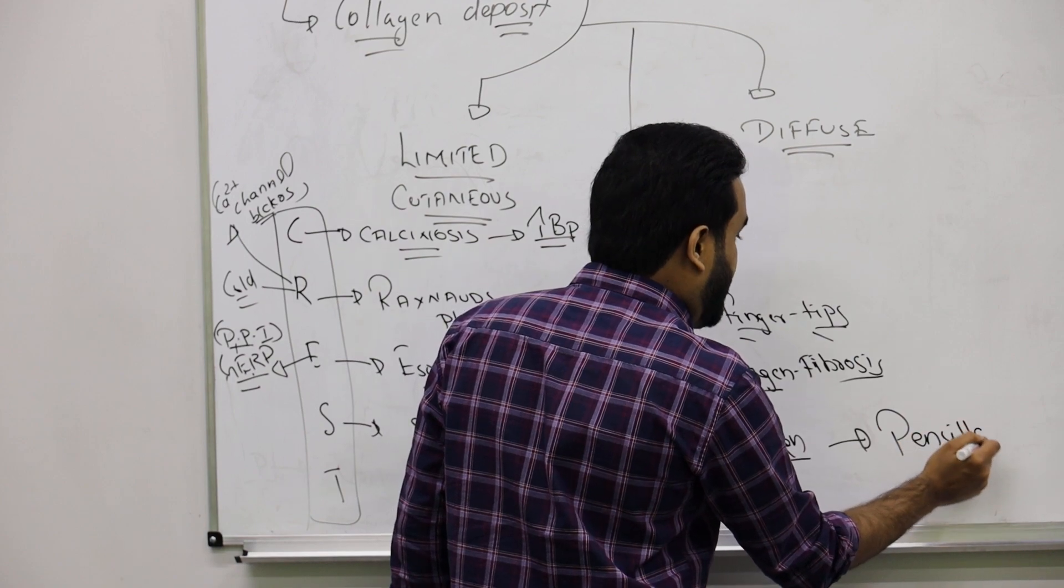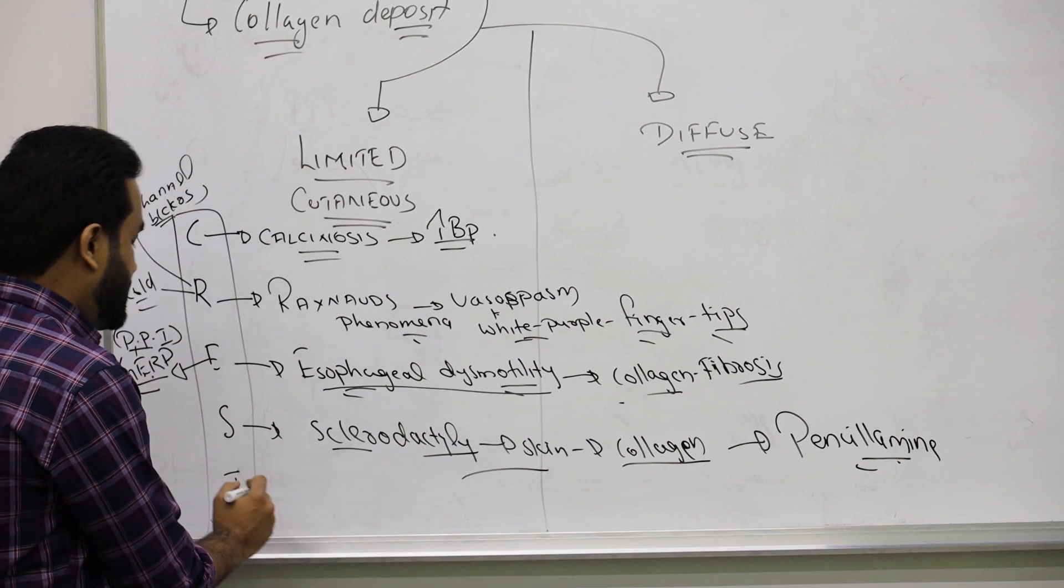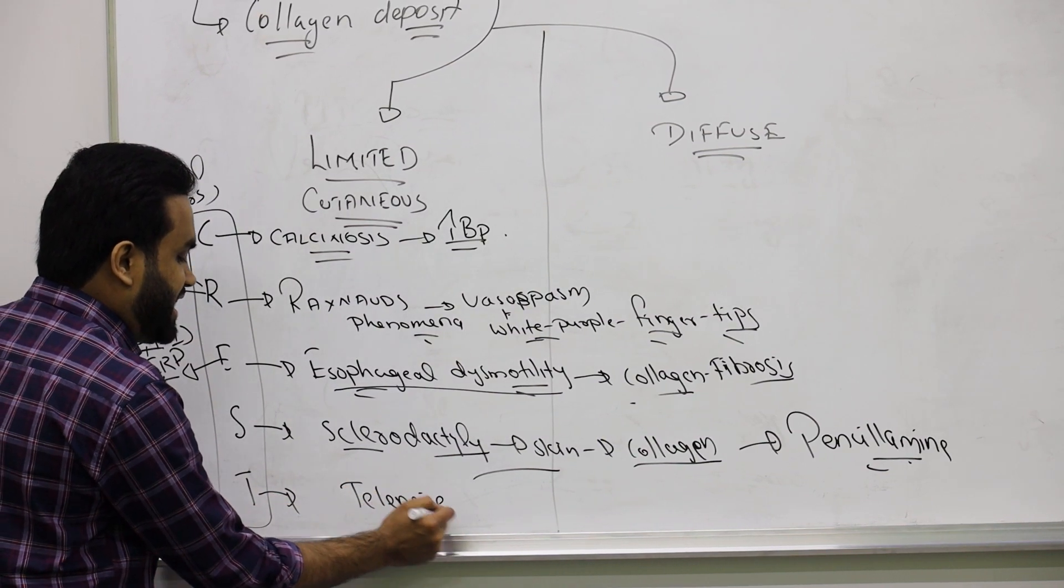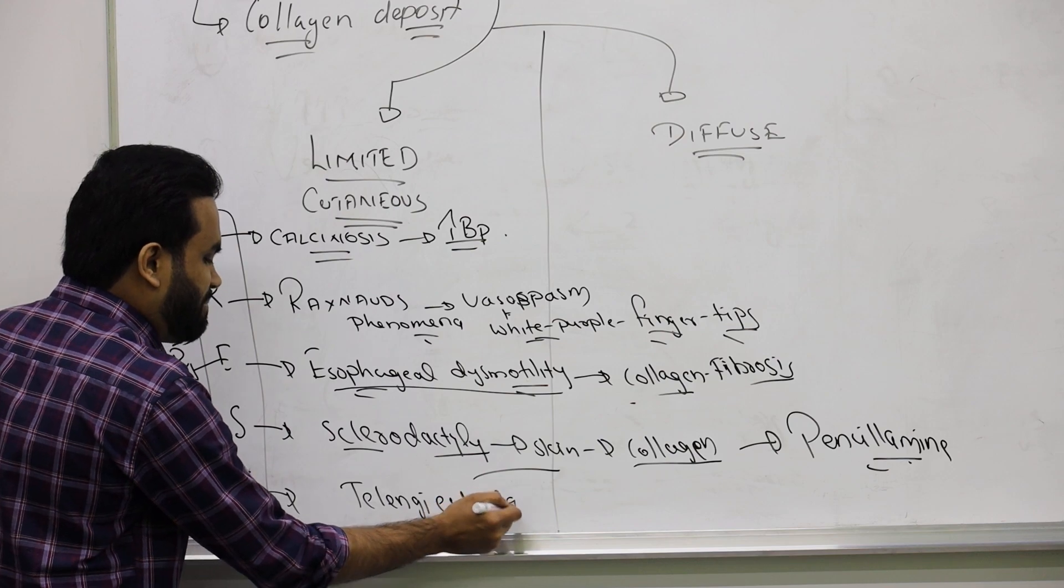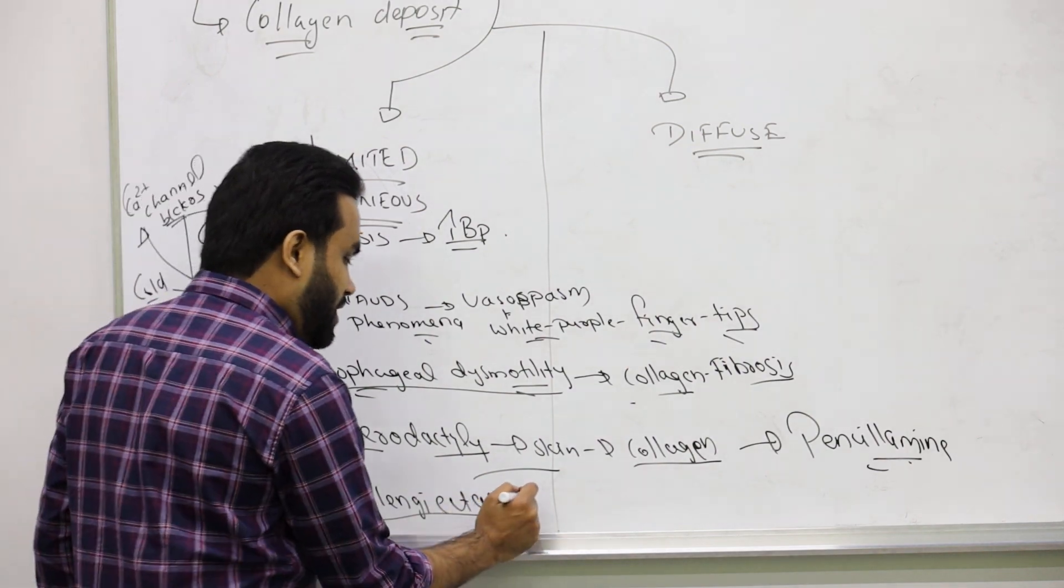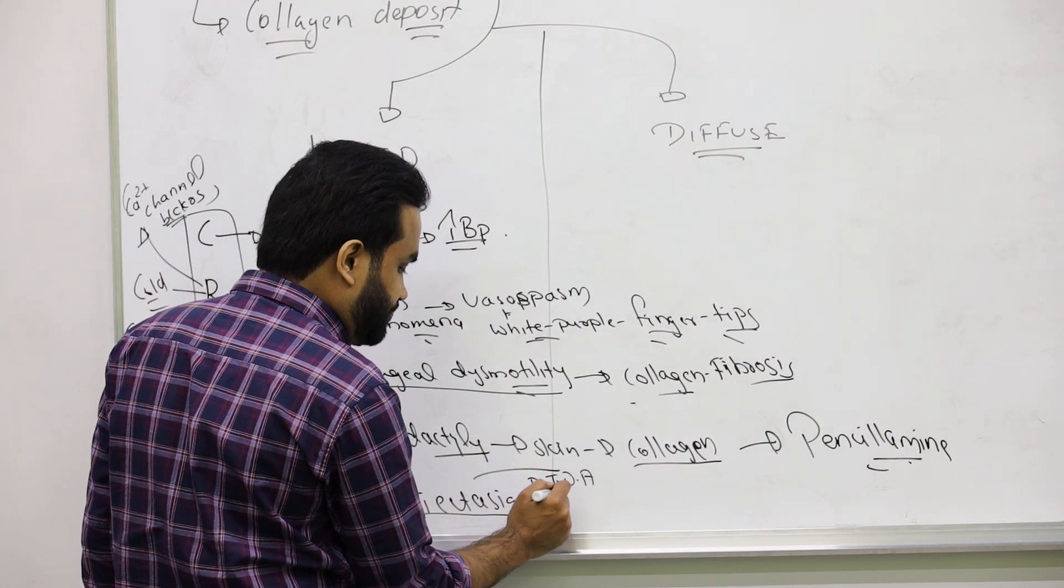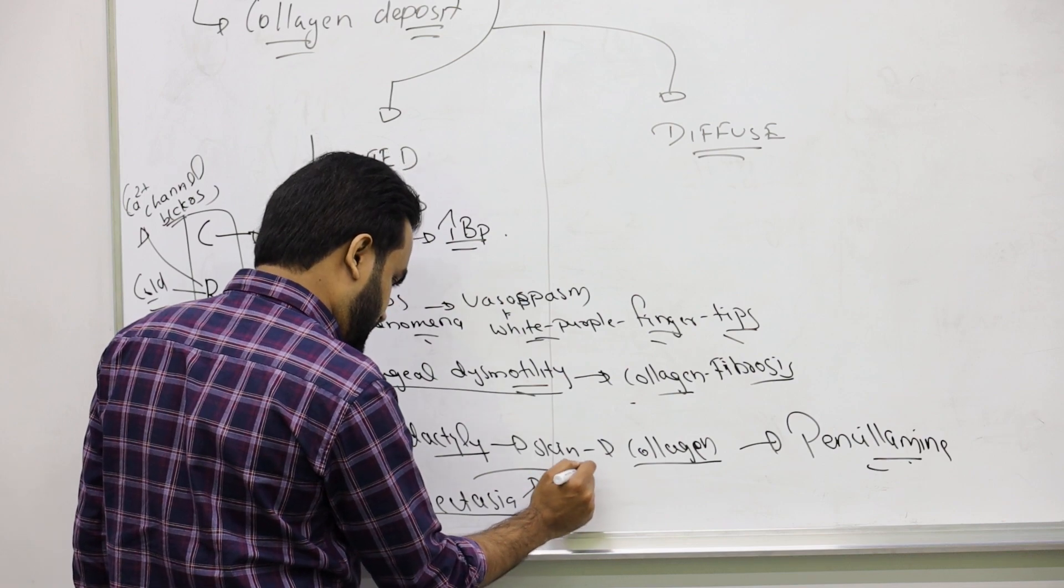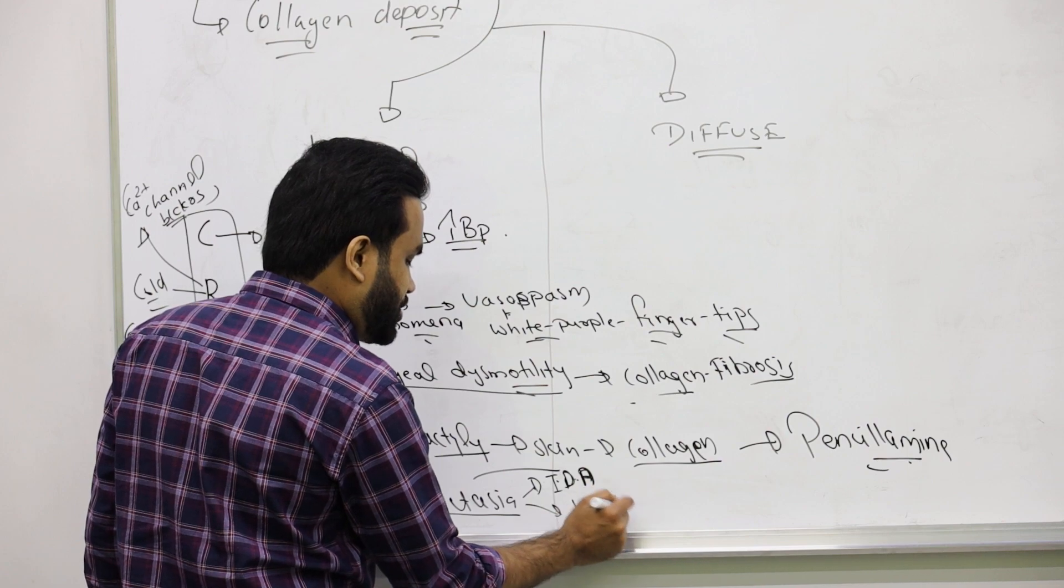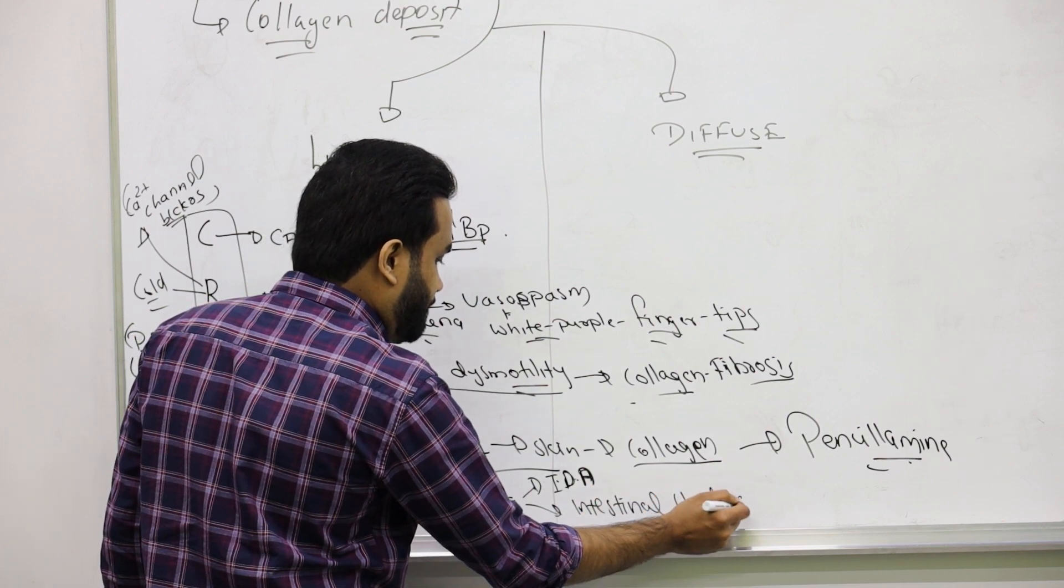Last one is very important: telangiectasia. Ectasia means stretching out - the blood vessels will stretch out. As a result, you will have easy bleeding and iron deficiency anemia. Patients will have bleeding from the intestine, intestinal bleeding. This comes because of telangiectasia.